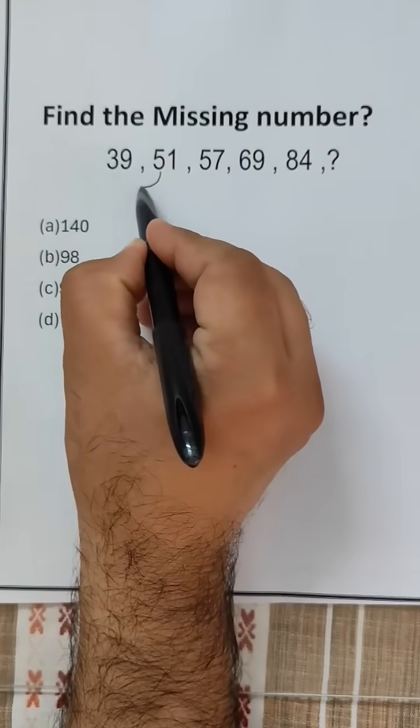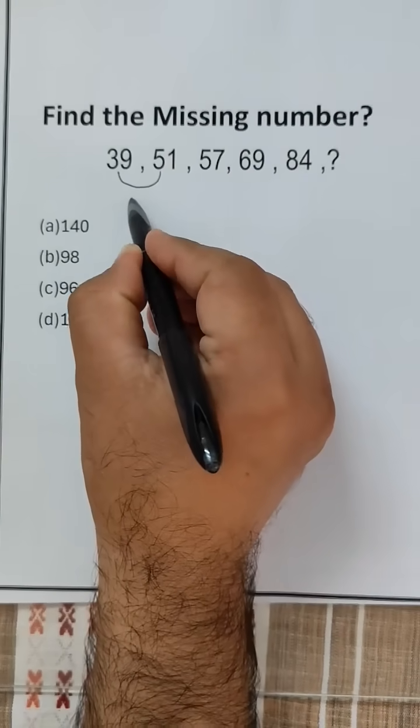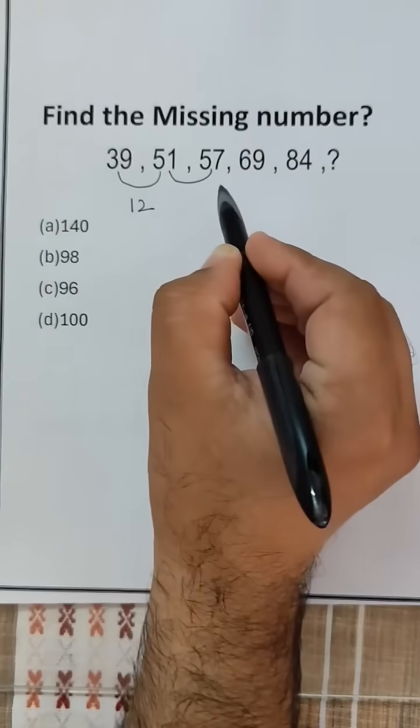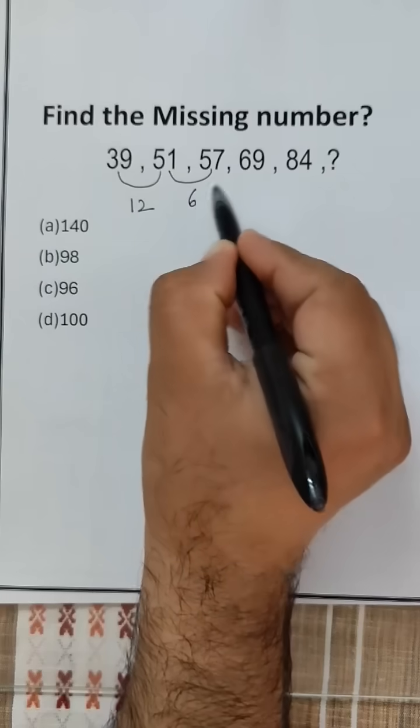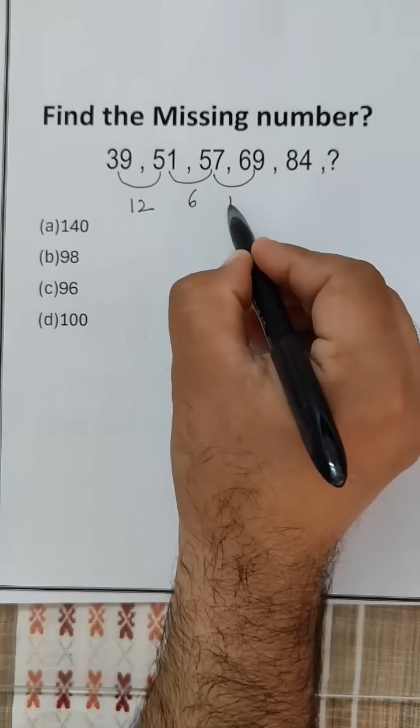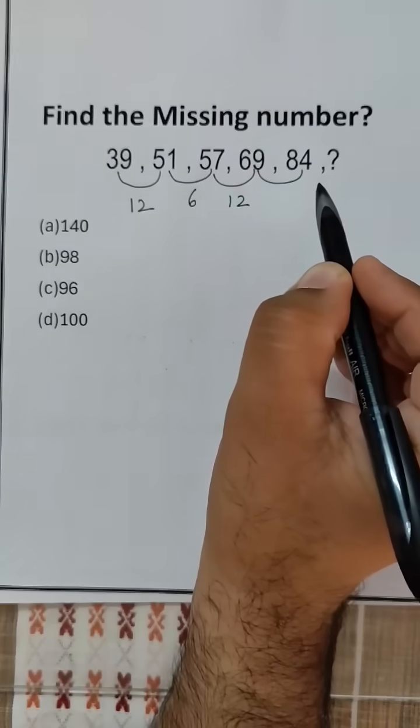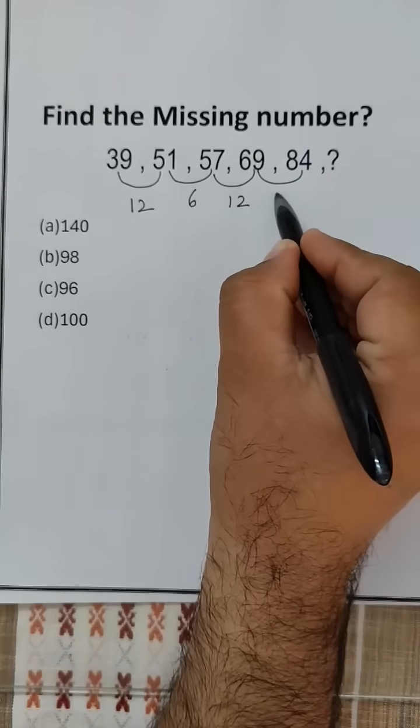Now let us find the difference between the terms. 51 minus 39 is 12, 57 minus 51 is 6, 69 minus 57 is 12, and 84 minus 69 is 15.